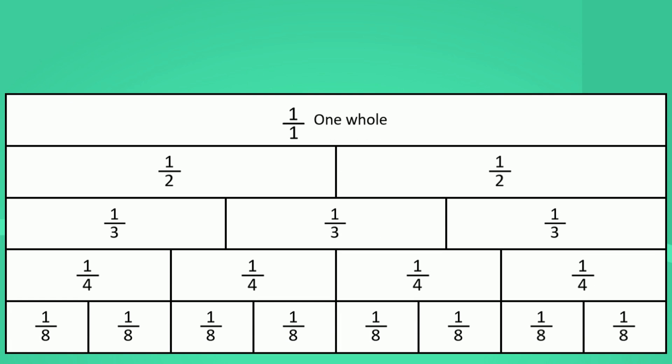Let's take this example. We can see from this fraction wall that one-half is equivalent to four-eighths. But what is the process of simplifying four-eighths so we end up with the simplest form, one-half?